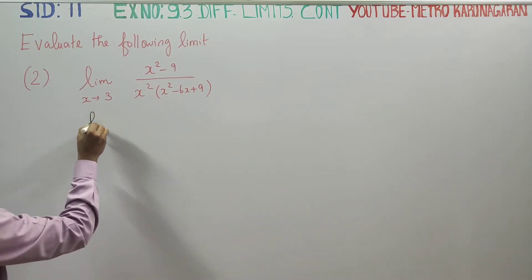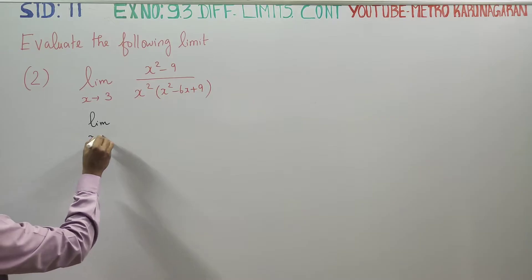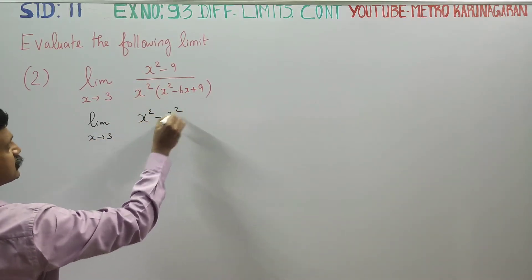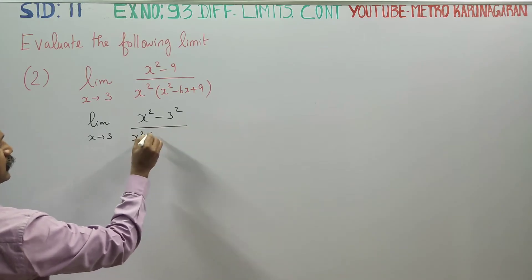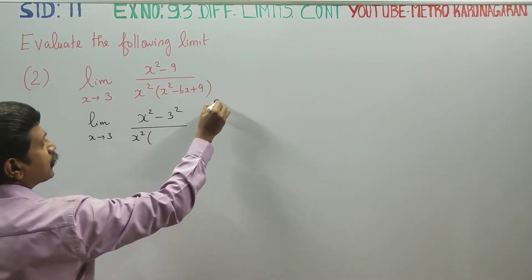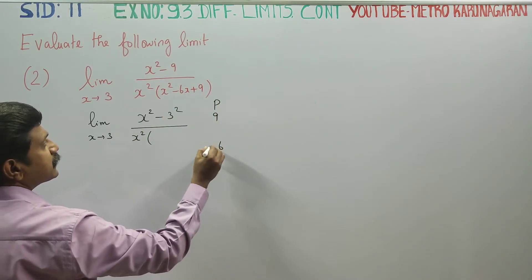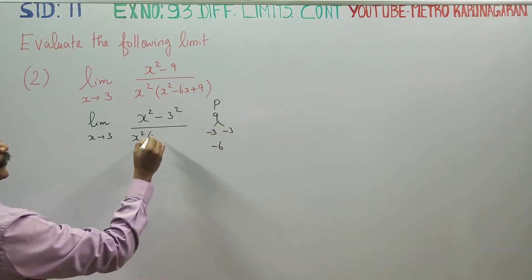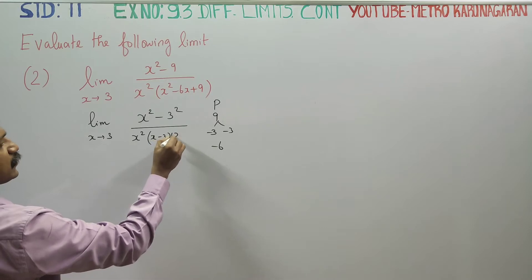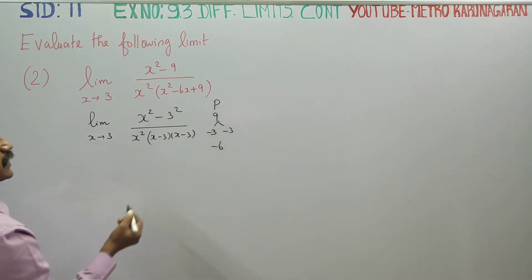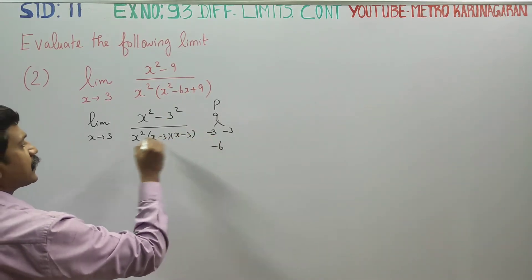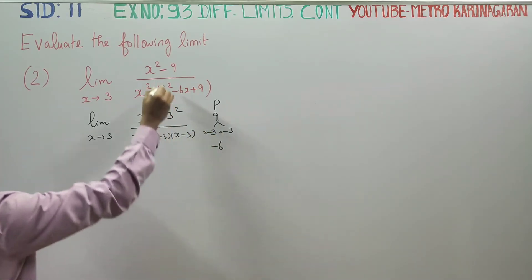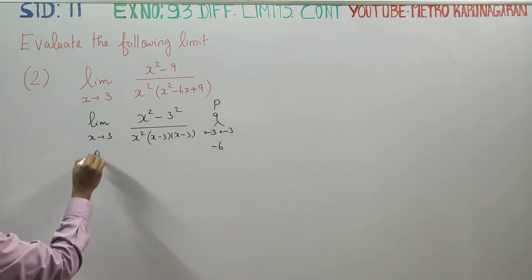First we will simplify this. Limit x turns to 3. The numerator x squared minus 9 can be written as a squared minus b squared. The denominator x squared minus 6x plus 9 has product 9 and sum minus 6, so it factors as x minus 3 into x minus 3. We use the factorize formula method.